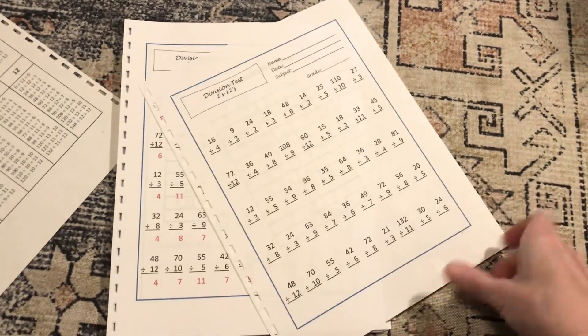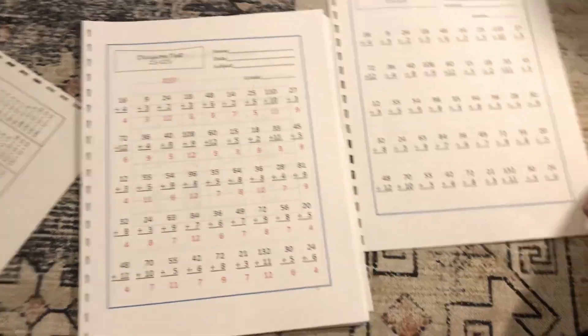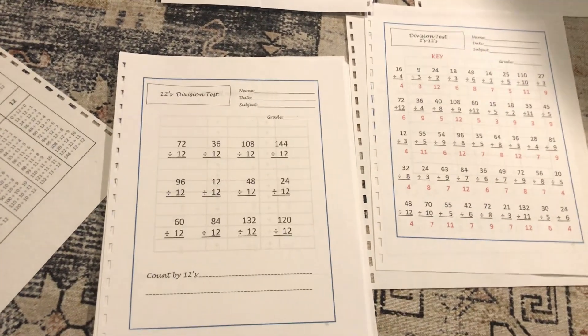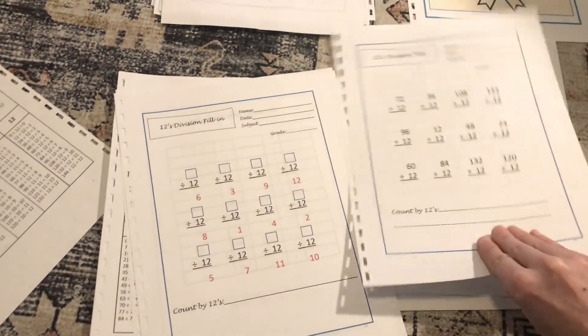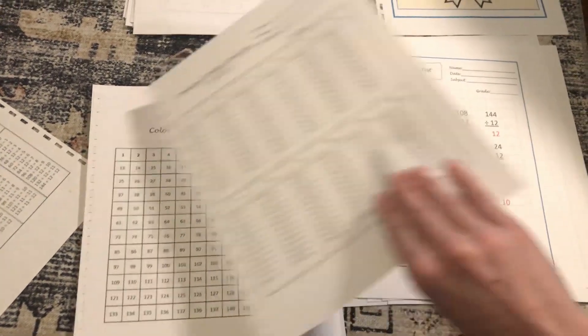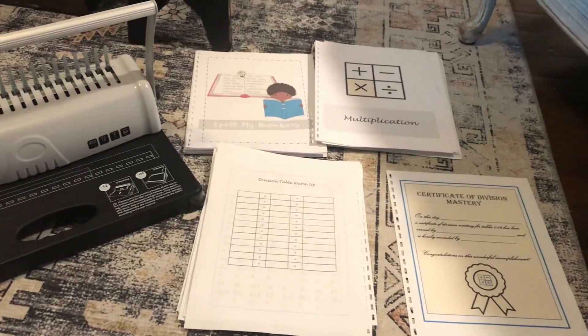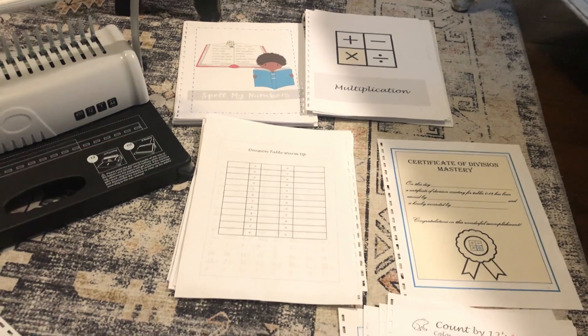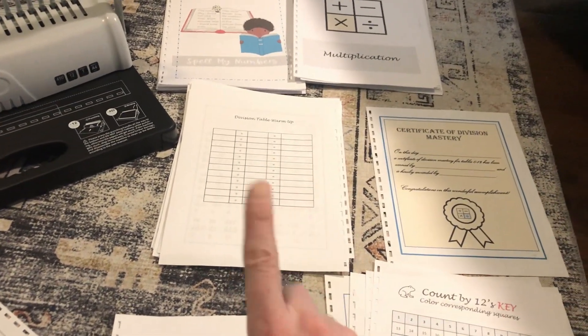I'm just going to go through and quickly put these back in the correct order and then I'm going to move into my multiplication and I'll show you what I have, a different warm-up sheet that I want to print onto the back side of all those pages.